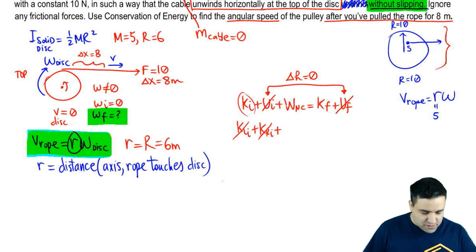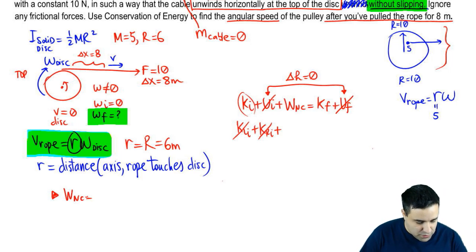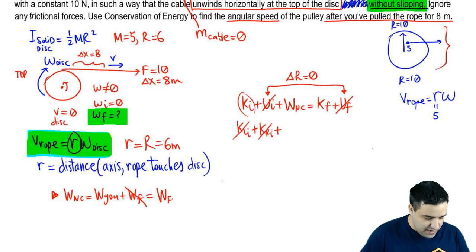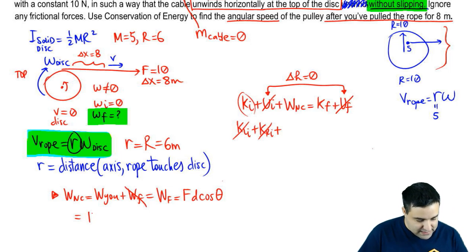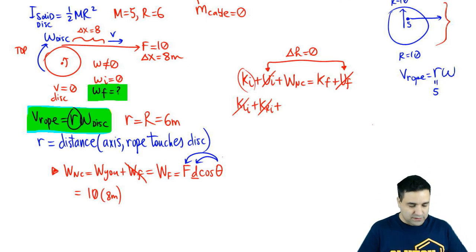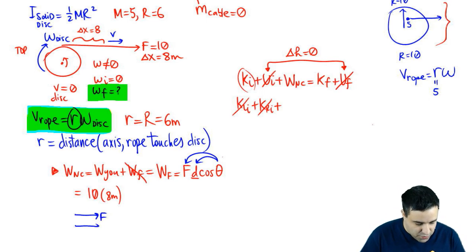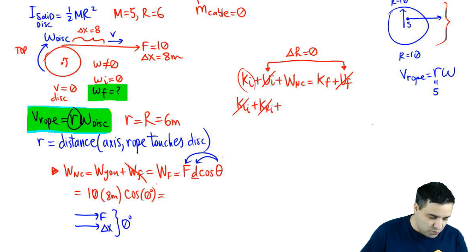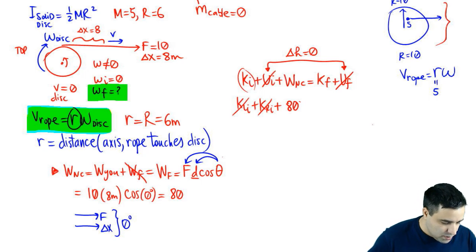What about work non-conservative? W_nc equals the work done by you plus the work done by friction. There's no friction, but you are pulling on this thing. The work done by you is F·D·cos(theta). Your force is 10, the distance D is 8 meters, and cosine of theta—the angle between your force and displacement—is cosine of zero, which is 1. So that's 10 × 8 × 1 = 80 joules.